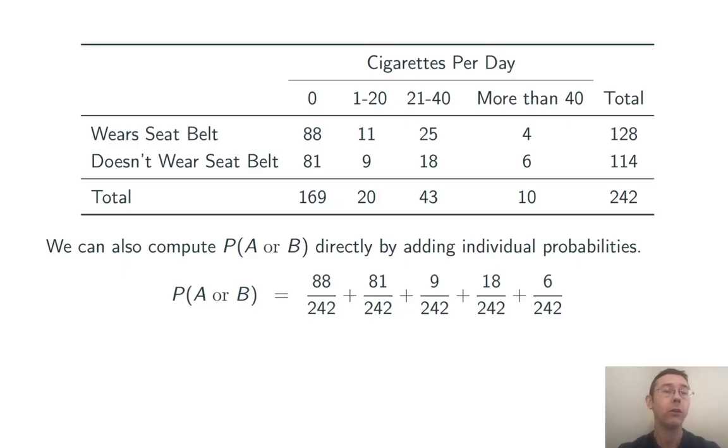Notice that all of these different events now are mutually exclusive from one another, so we really can do the addition rule in its more basic form. Adding all of this up, we get 202 divided by 242, the same probability that we computed before.